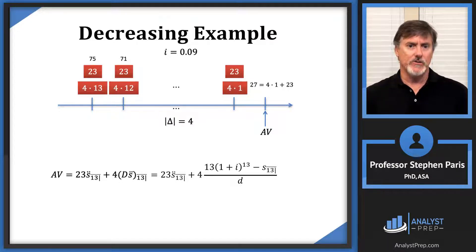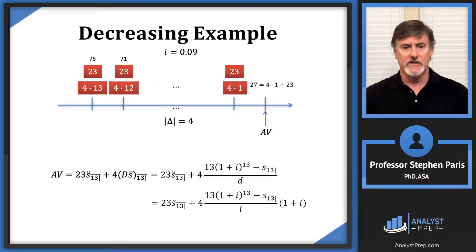At this point, I'm just evaluating everything at an i value of 0.09. So I go to my calculator and I start doing some calculations, and I get an accumulated value of $1,394.25. That's what the accumulated value is—that's my answer.